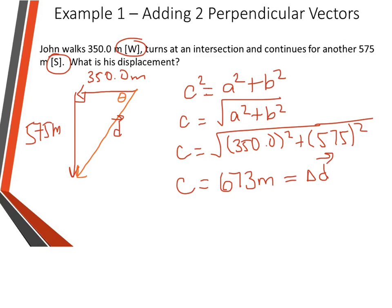Now we need to know our angle because it's not a due direction — there is an angle involved. So every time you do this, you're going to be using your tan. You could use any of the trig functions, but if you made a mistake calculating that displacement, it's always best to use the values that were given to you in the question. So to figure out our theta, we'll be doing tan theta — that's always our opposite over our adjacent. Then you're going to use the inverse because you're trying to find an angle, so you get 59 degrees.